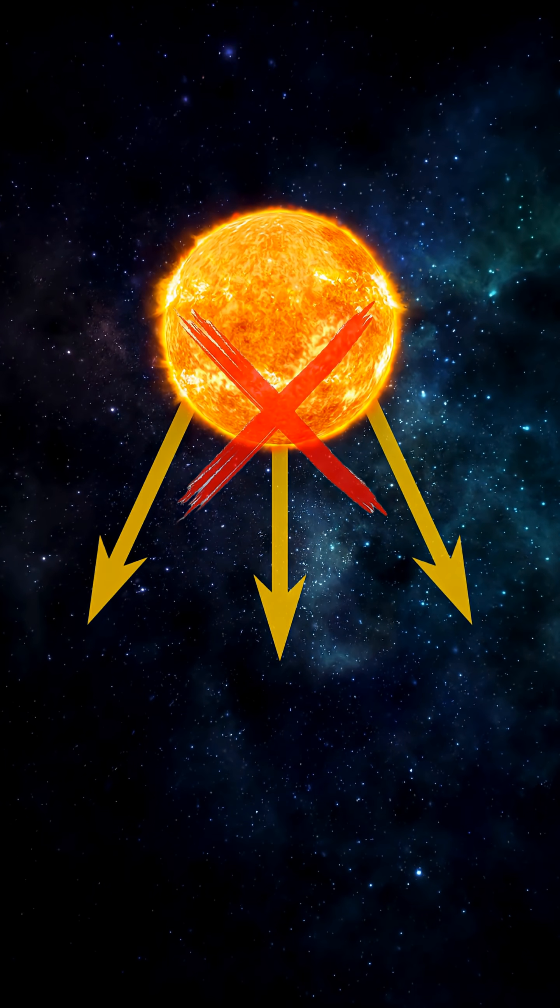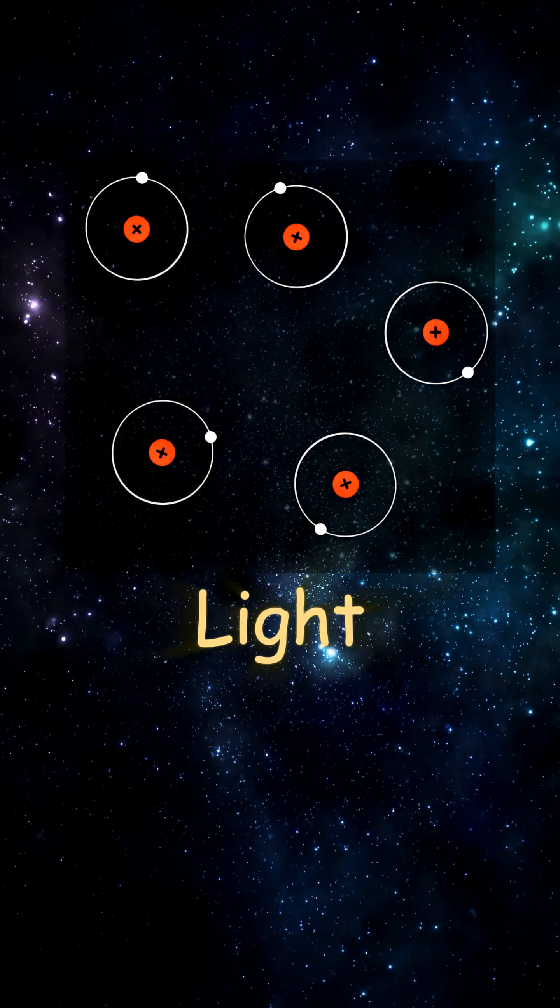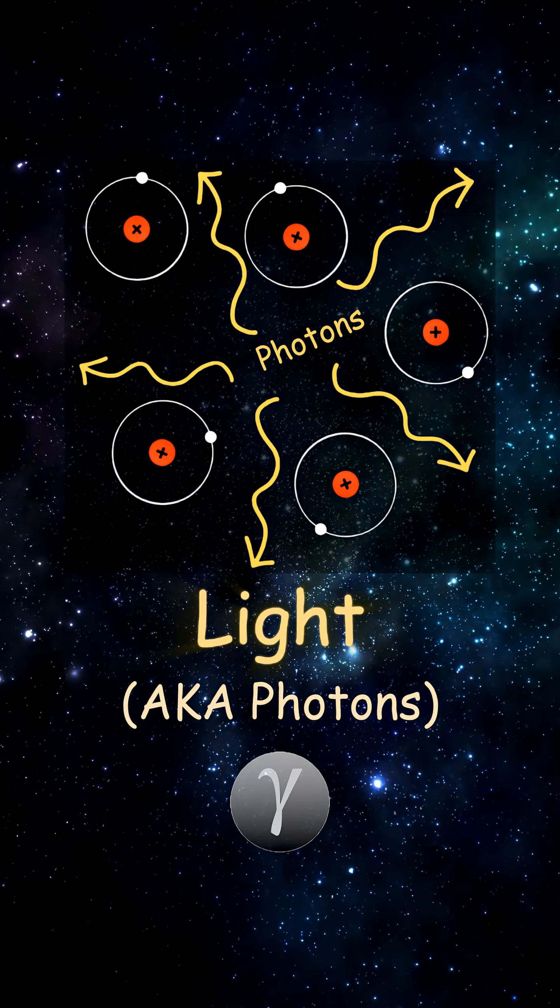Back then, light couldn't move freely, it constantly bounced off particles, but once the universe cooled and atoms formed, light, aka photons, managed to break free.